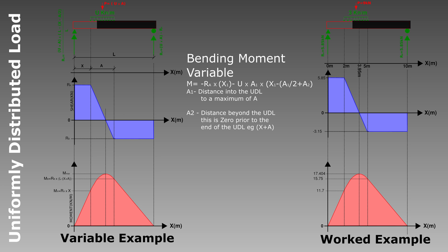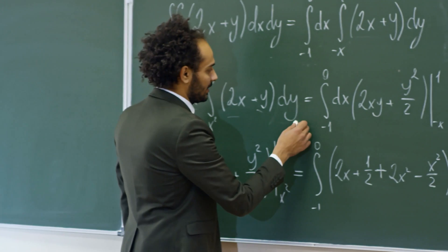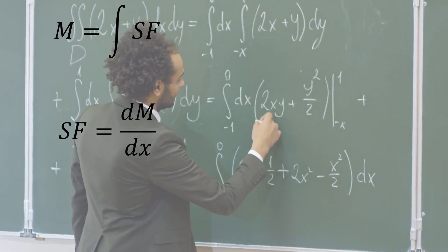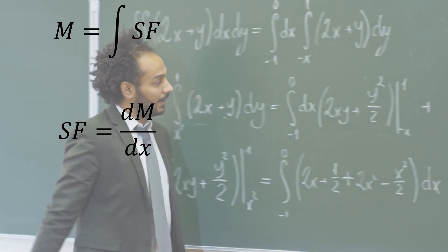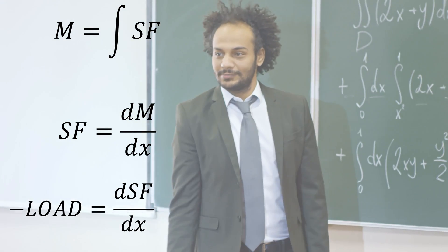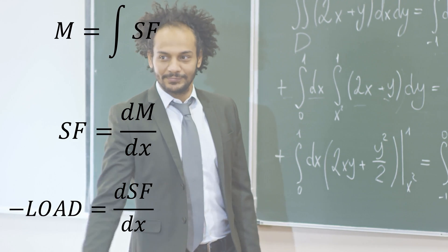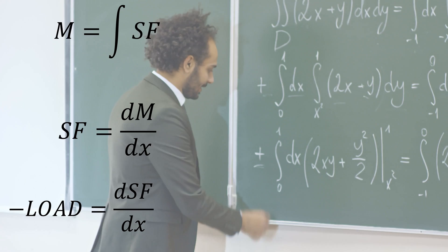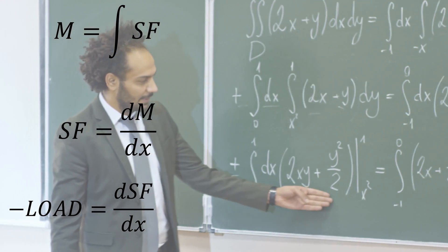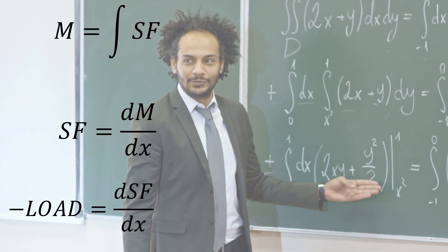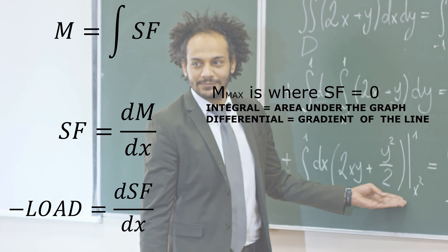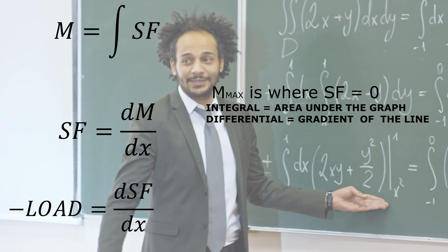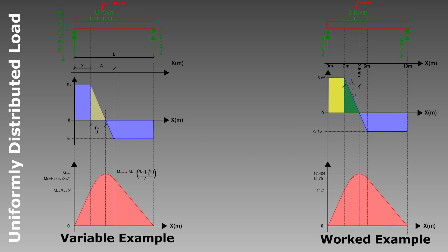The relationship between shear force and bending moment is a calculus one: the integral of the shear force is equal to the bending moment diagram, and likewise the differential of the bending moment diagram is equal to the shear force. This relationship extends to the applied loads, where the derivative of the shear force equals the applied loads and reactions. This also tells us that the peak bending moment occurs where the shear force crosses zero.